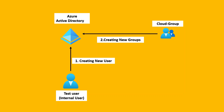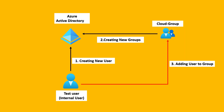In our scenario, we will create one group called 'cloud group' and then add the test user to that group. Once the test user is added to the cloud group, whatever permissions are assigned to the cloud group will automatically be assigned to the test user as well.